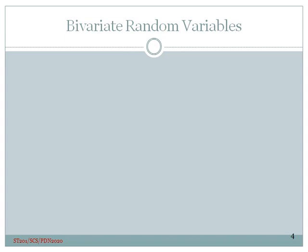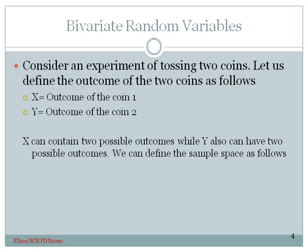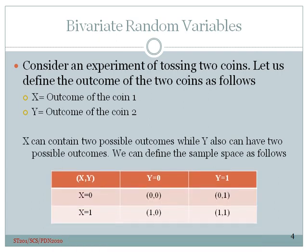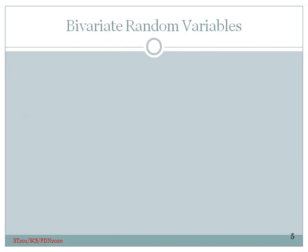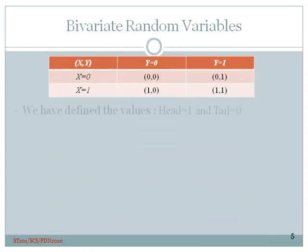Let's look at bivariate random variables in detail. Consider an experiment of tossing two coins. You are very familiar about this example. Let us define the outcome of the two coins as follows. Random variable x is the outcome of the coin 1 and random variable y is the outcome of the coin 2. x can contain two possible outcomes while y also can have two possible outcomes. We can define the sample space as follows. In this 2 by 2 table, the first cell indicates x equals 0 and y equals 0. If we define the value of head to be 1 and value of tail to be 0, we can rewrite the table as above.